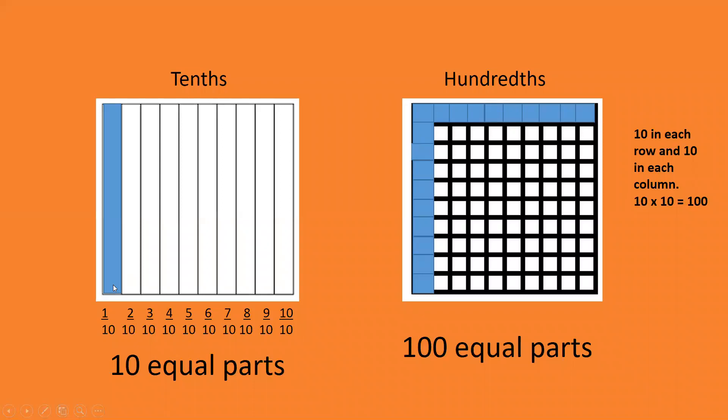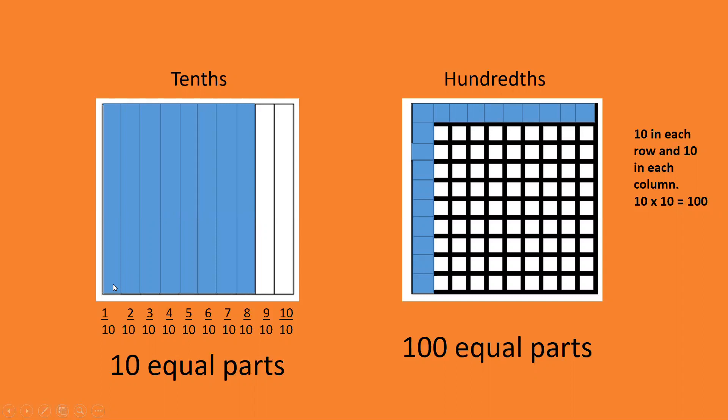If we count on from one tenth, we've got two tenths, three tenths, four tenths, five tenths, six tenths, seven tenths, eight tenths, nine tenths, ten tenths, which makes one whole.